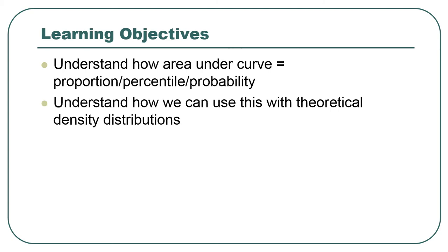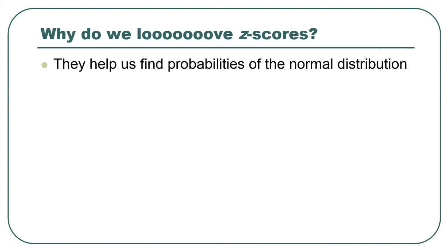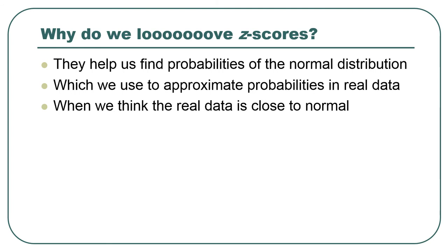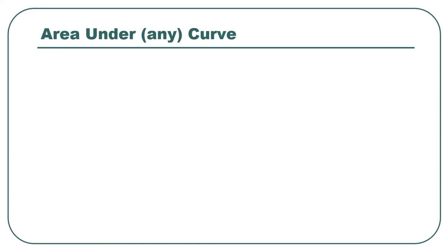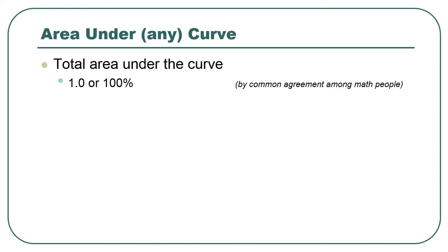Remembering why we love z-scores: they help us find probabilities in the normal distribution, which we use to approximate probabilities in real-world data. For the area under any density curve, we define that total area as one — by common agreement. Even though the normal distribution extends to infinity on the right and left, getting skinnier and skinnier, you can say the total area is 1, or 100%.